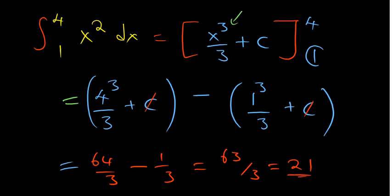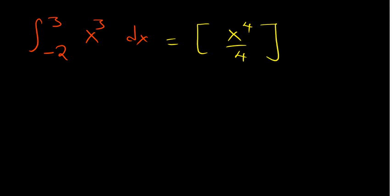This applies whether the limits are negative or positive. For practice, try this one. The integral of x³ is x⁴/4. At this point, it's not necessary to add c because it will always be subtracting. We have 3 and negative 2 as our limits.